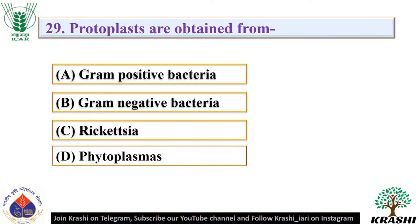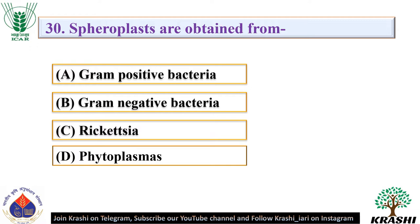Question number 29: Protoplasts are obtained from — these are obtained from gram-positive bacteria. The resultant protoplasts are deficient of cell wall. Question number 30: Spheroplasts are obtained from — they are obtained from gram-negative bacteria. In spheroplasts, the cell wall is incomplete and non-functional.